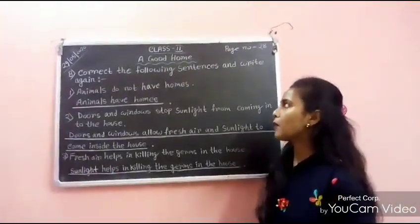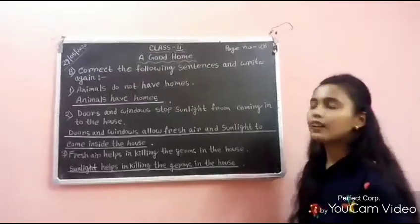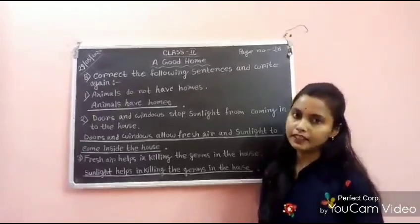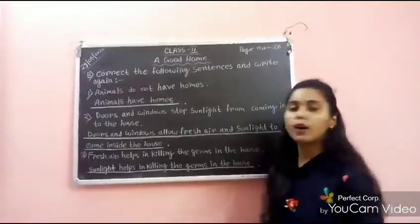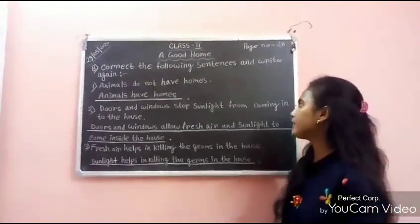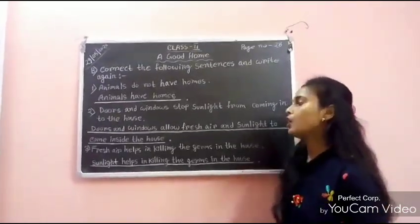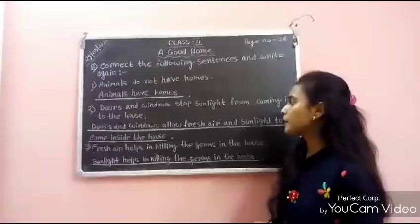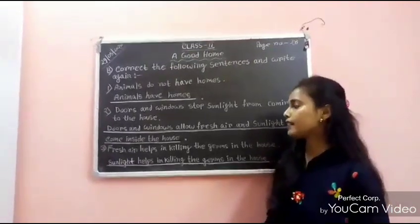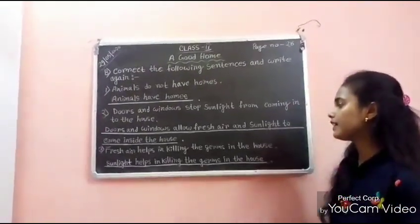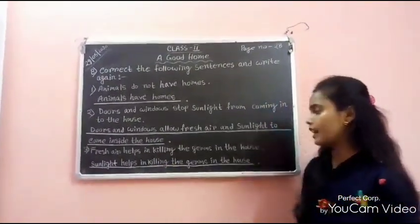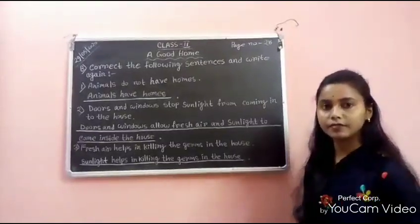Correct the following sentences and write again. Number 1: Animals do not have homes — this statement is wrong. The correct answer is: animals have homes. Number 2: Doors and windows stop sunlight from coming into the house — the correct answer is: doors and windows allow fresh air and sunlight to come inside the house. Number 3: Fresh air helps in killing the germs in the house — the correct answer is: sunlight helps in killing the germs in the house.